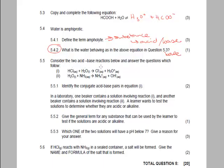Right. Now it says, consider the two acid-base reactions below, and answer the questions which follow. So you've got hydrochloric acid plus water gives you chloride plus hydronium. And water plus ammonia gives you ammonium plus hydroxyl. It says, in a lab, one beaker contains a solution involving reaction 1, and another beaker contains a solution containing reaction 2. The learner wants to test the solutions to determine whether they're acidic or alkaline. Give the general term for any substance that can be used to test whether it's acid or basic. That is just an indicator.